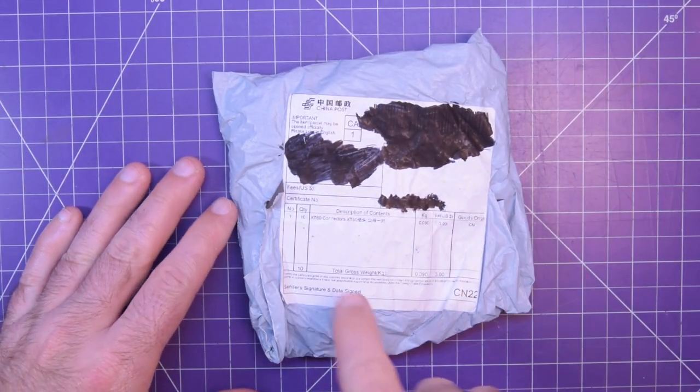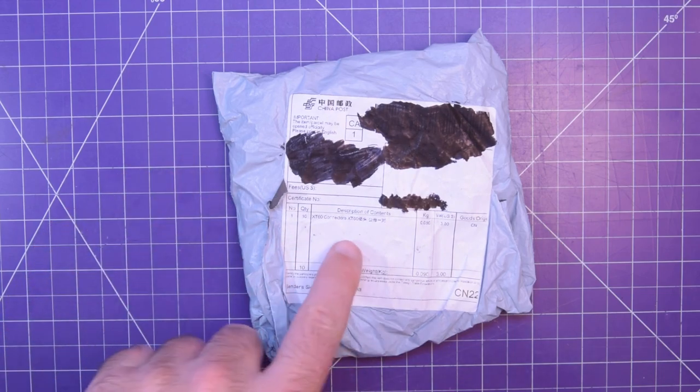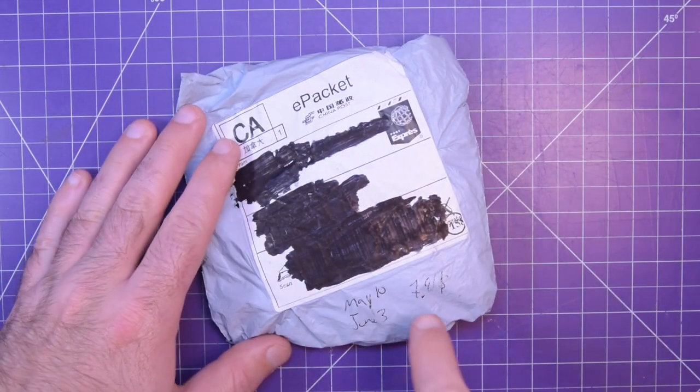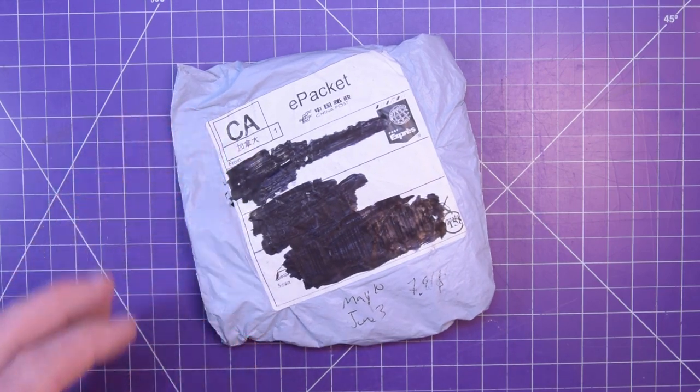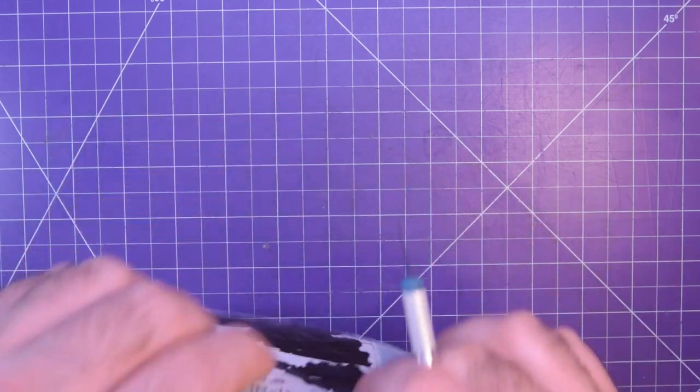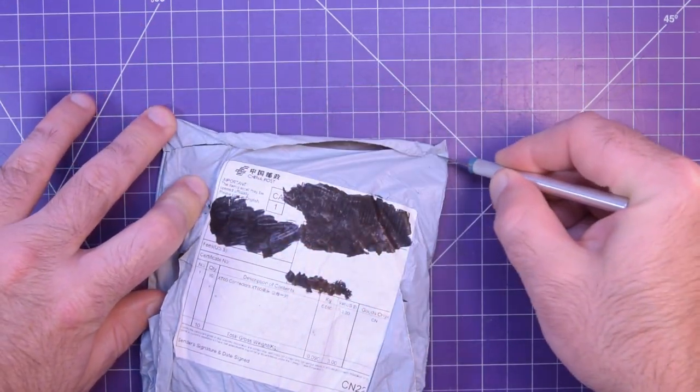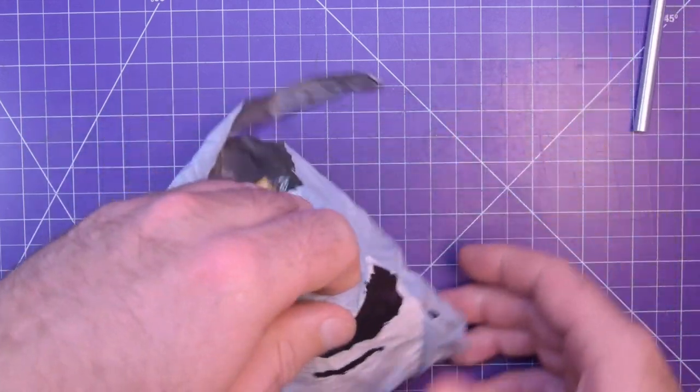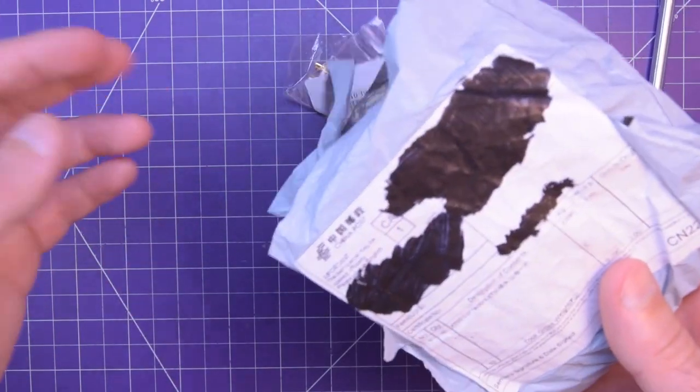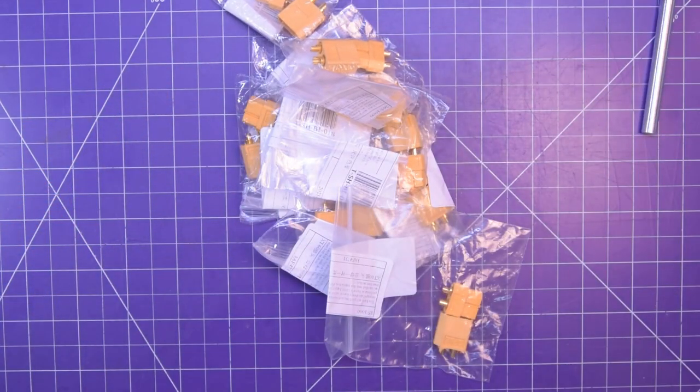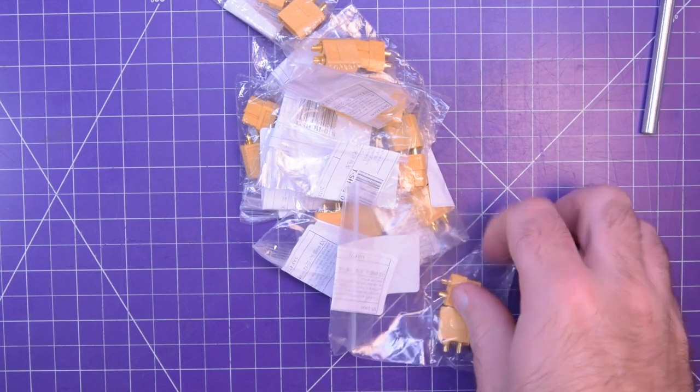Next one up is this one here. It's XT60 connectors. So I guess there's not really much mystery of what's in there. $7.91. May 10th to June 3rd. And of course, all these prices might seem a little bit higher than what you can get on AliExpress. But that includes shipping. So here we go.